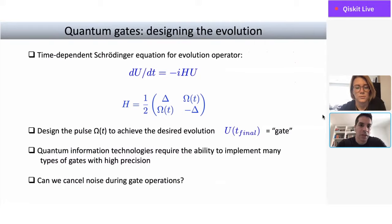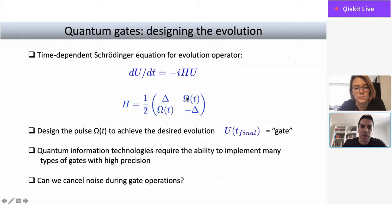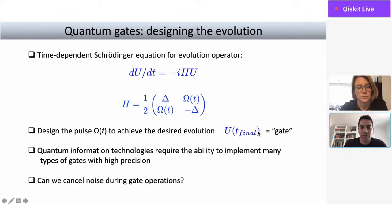But in quantum computing, we're not only interested in preserving the state of the qubit — we also want to perform operations on them. So the question becomes: can we perform operations while simultaneously combating noise? A quantum gate is just the evolution operator of the qubit, described by the time-dependent Schrödinger equation. For a single qubit, the Hamiltonian can have a constant field delta on the z-axis and a driving field omega(t) on the x-axis. The goal is to choose this driving field such that at the final time, the evolution operator has some desired form — some particular unitary matrix.